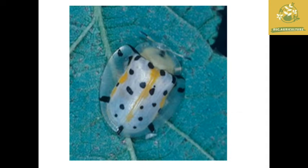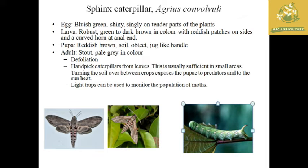The next pest is the sphinx caterpillar, where the scientific name is Agrius convolvuli. It is a large, important pest which is robust as well as a gregarious feeder, causing defoliation of the whole plant in severe infestation cases. The egg is bluish-green and shiny. The larvae are gregarious feeders with a robust appearance, green to dark brown in color with reddish patches on both sides.